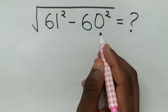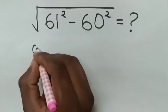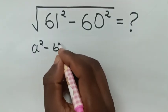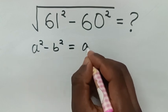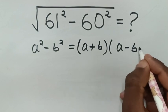So, from this expression inside the bracket, 61 square minus 60 square is in the form of a square minus b square is equal to a plus b times a minus b.